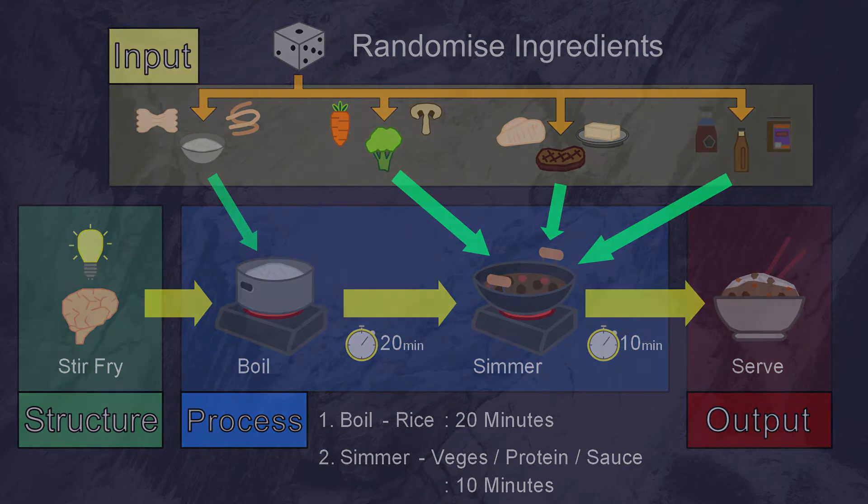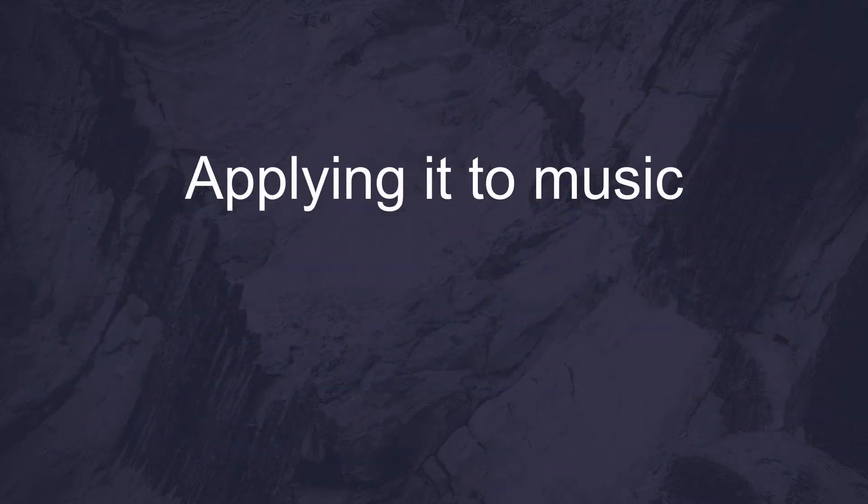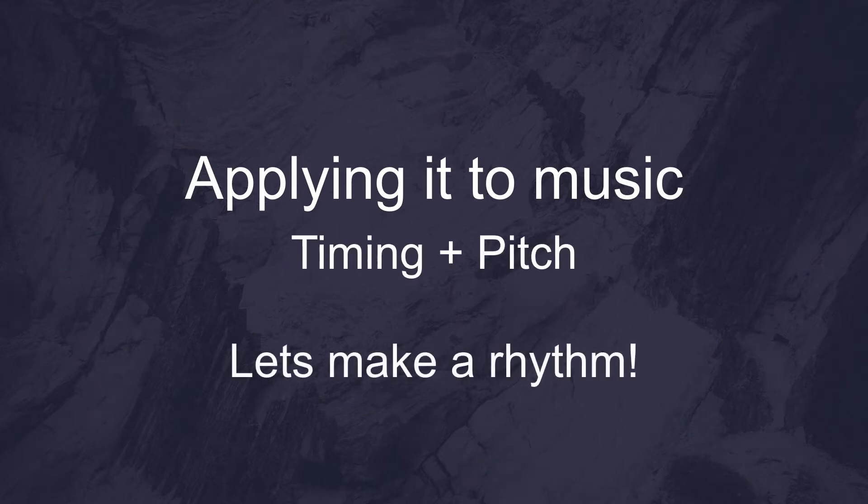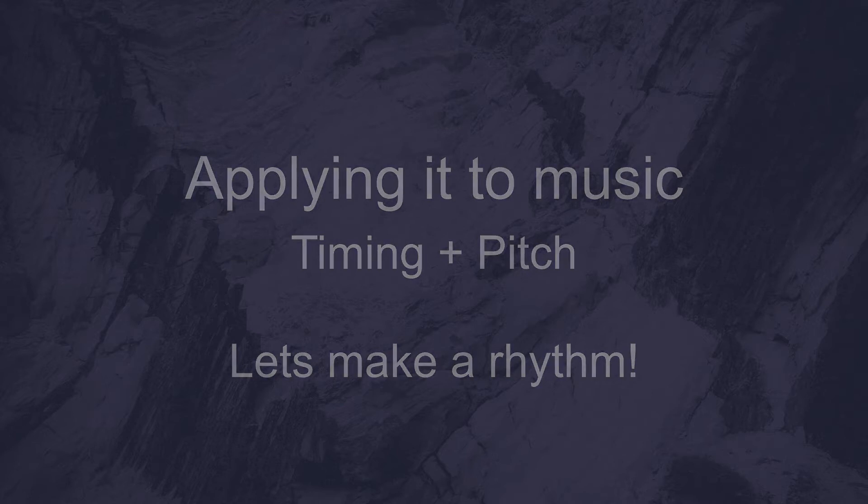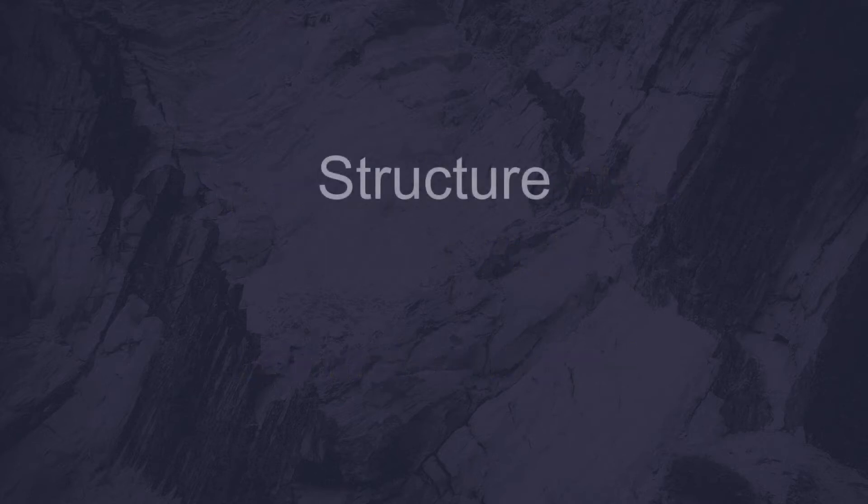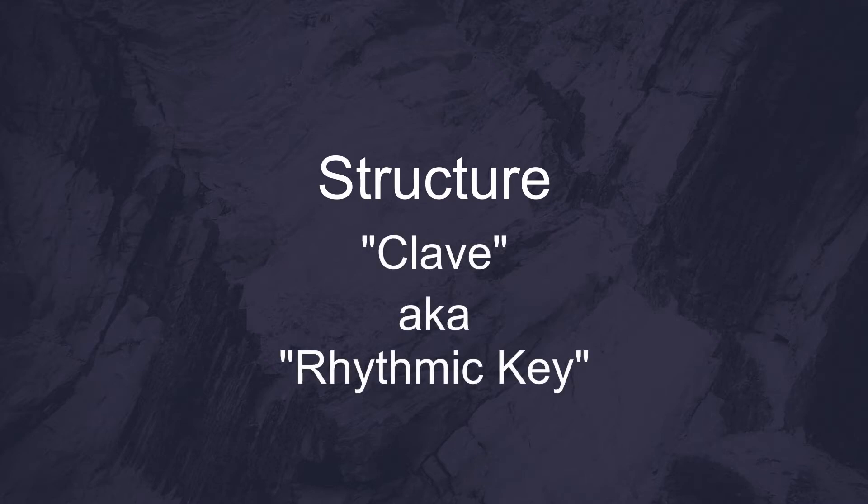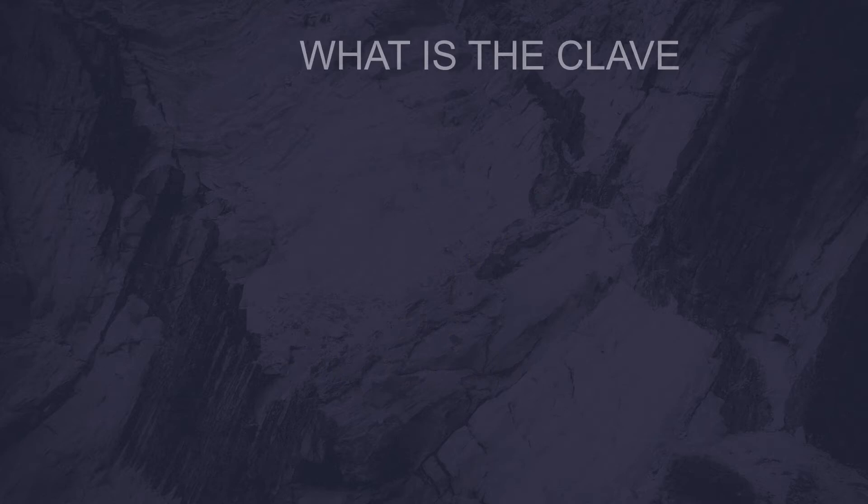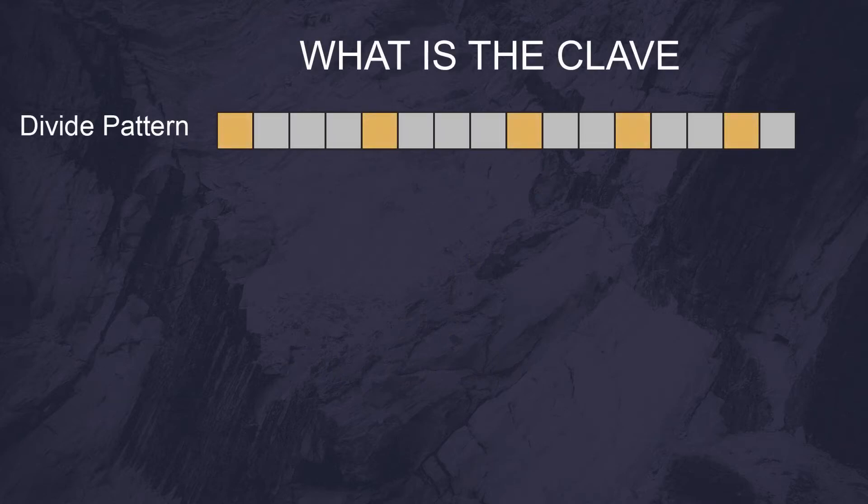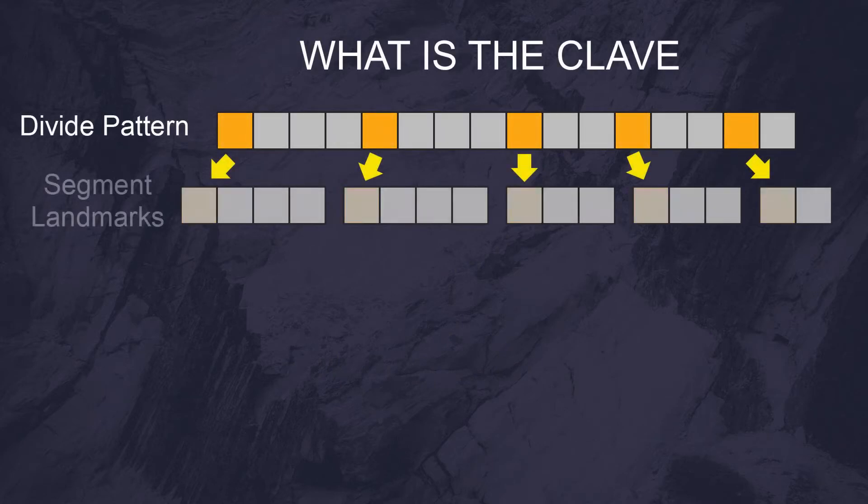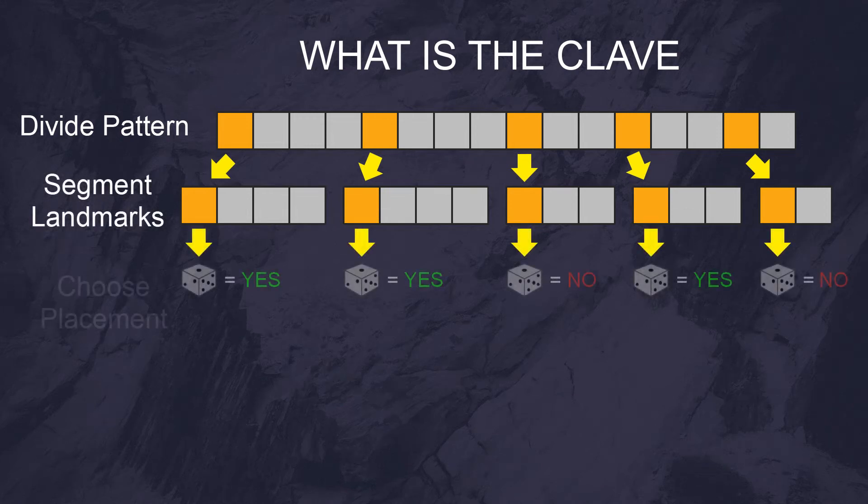So let's take this idea and apply it to music. To make a musical pattern, we need to generate two things: timing and pitch. So let's solve the problem of making rhythms first. The first thing we need is a structure to put everything into. For this, I used the concept of the clave, also referred to as the rhythmic key. The purpose of the clave is to divide a bar of musical patterns into segments.